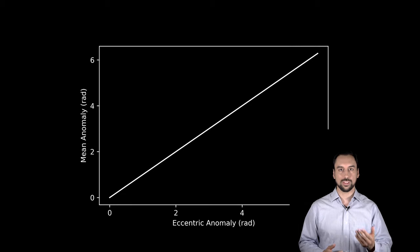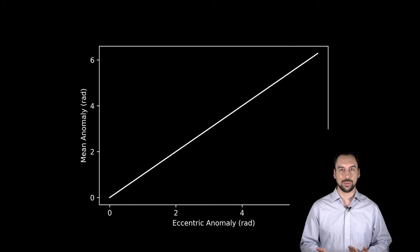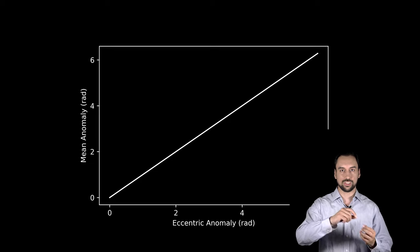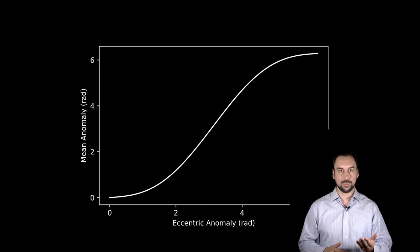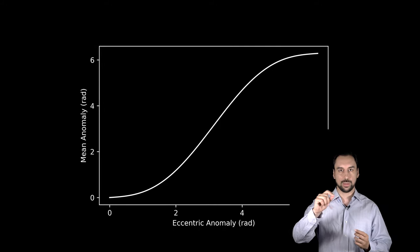For a circular orbit, the mean anomaly and the eccentric anomaly are exactly the same, so in the chart we will see a straight line. But for elliptical orbits, the eccentricity will bend the straight line into an s-shaped curve.